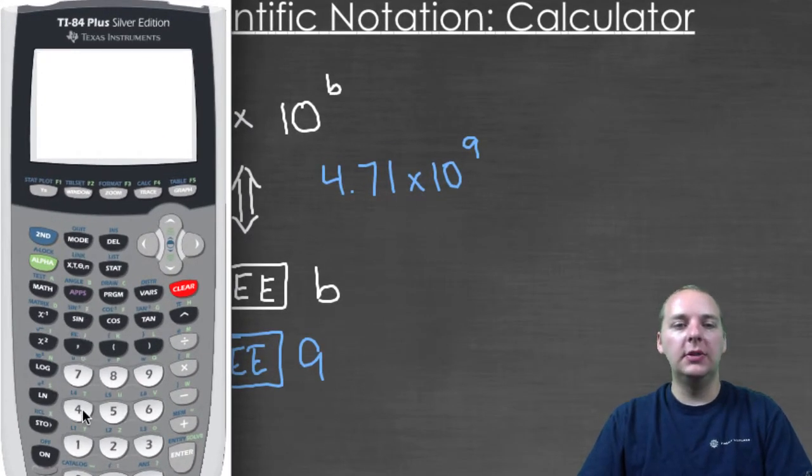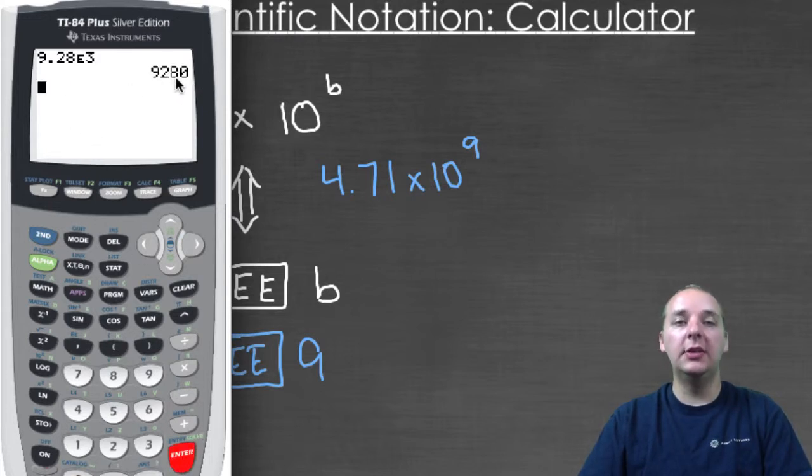And so for instance if you said nine point two eight times ten to the third, or something like that, then this would be nine two eight oh. And you see what's happened here, we've taken this decimal place and moved it right three places.